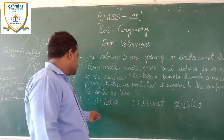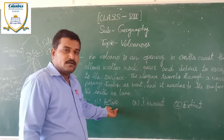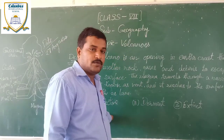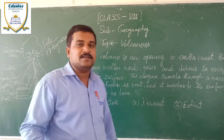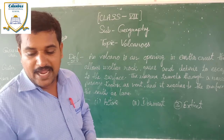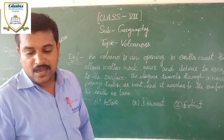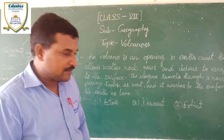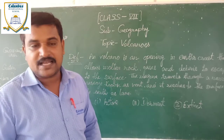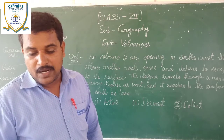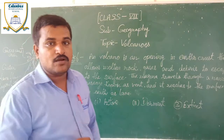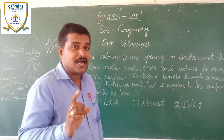There are three types of volcanoes. The first one is the active volcano. An active volcano can erupt at any moment, as volcanic activities are continuously taking place in them. It means it can happen anytime because volcanic activities are always taking place. Mauna Loa in Hawaii is an example of an active volcano. Write it in your notebook as the example of an active volcano.